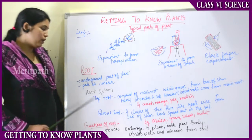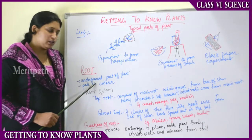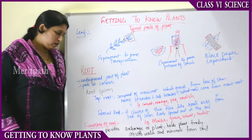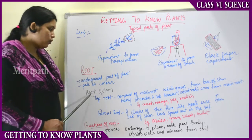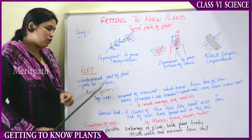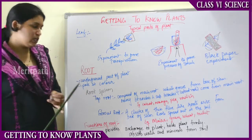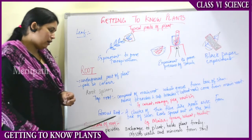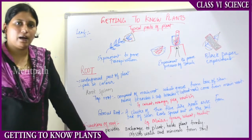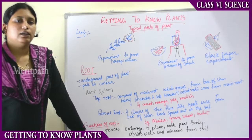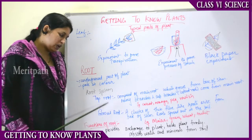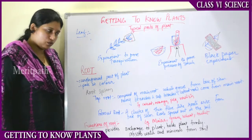Moving on to the root: the root is the underground part of the plant, pale in color, present below the soil. There are two types of root systems: tap root and fibrous root. Roots have many branches and are classified into these two types.